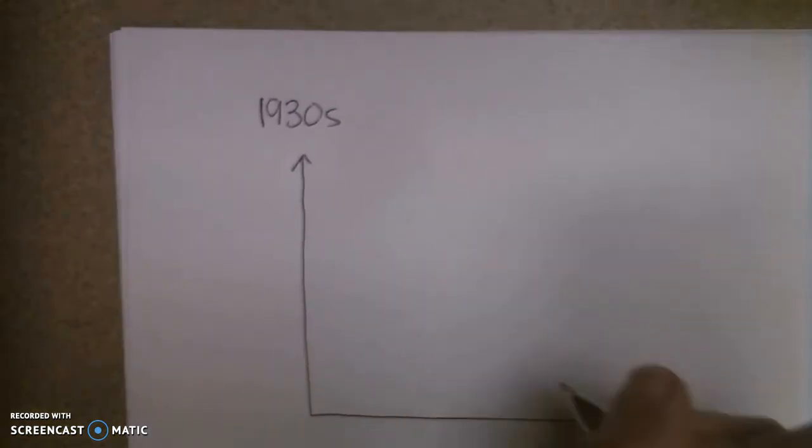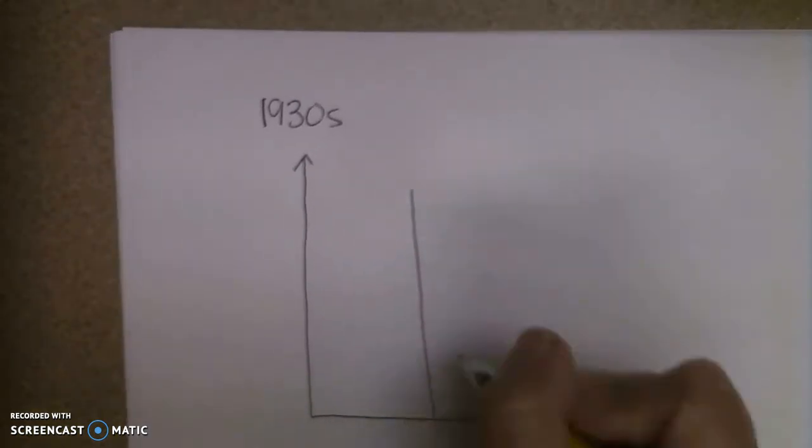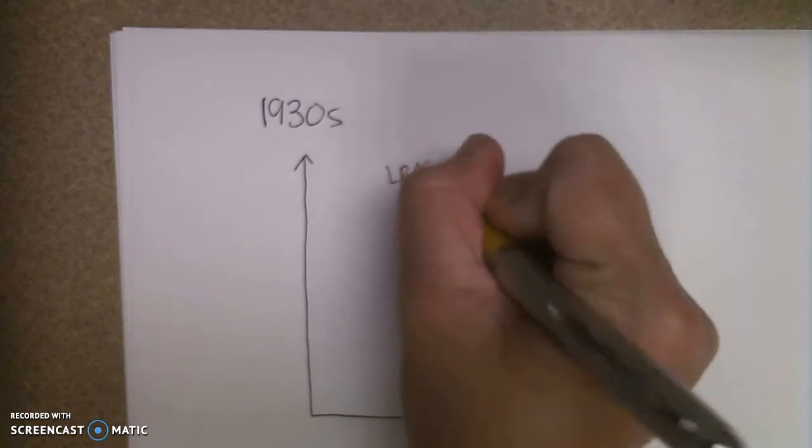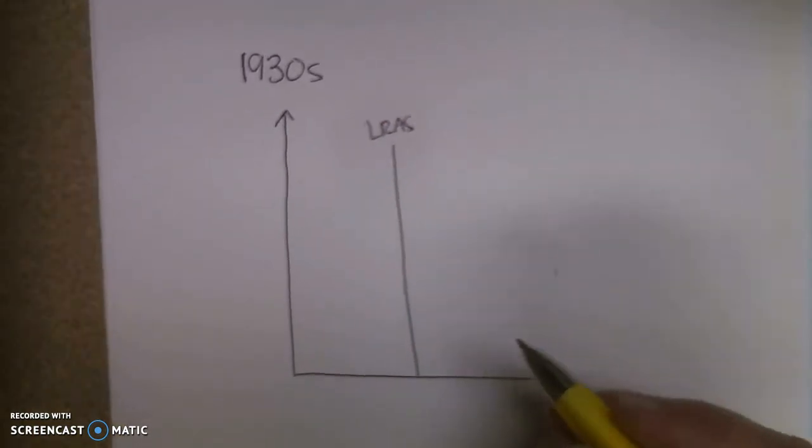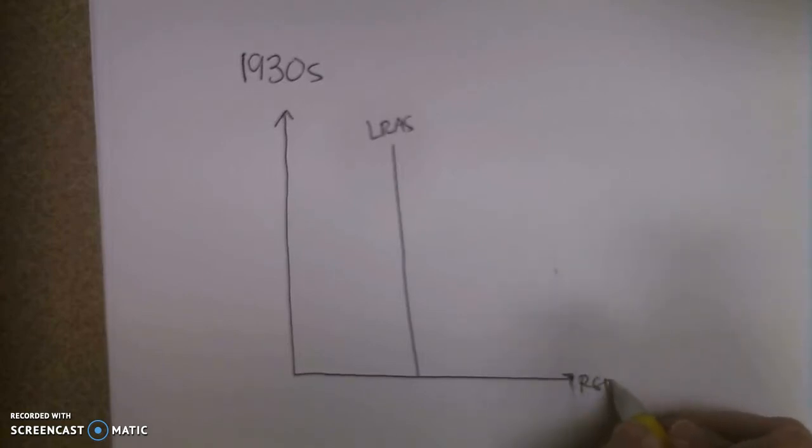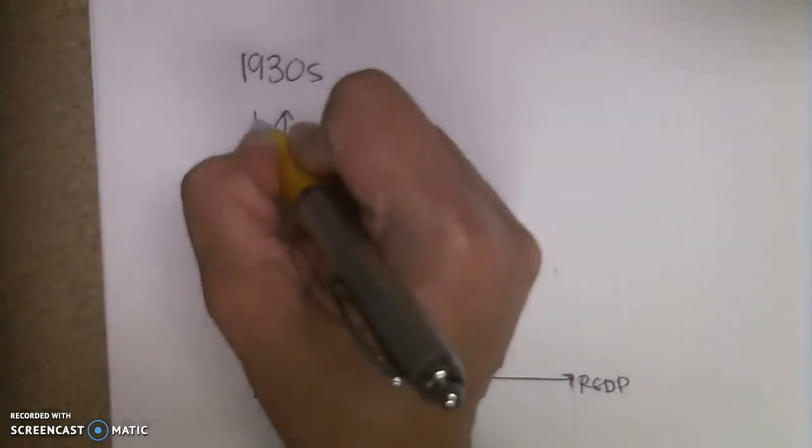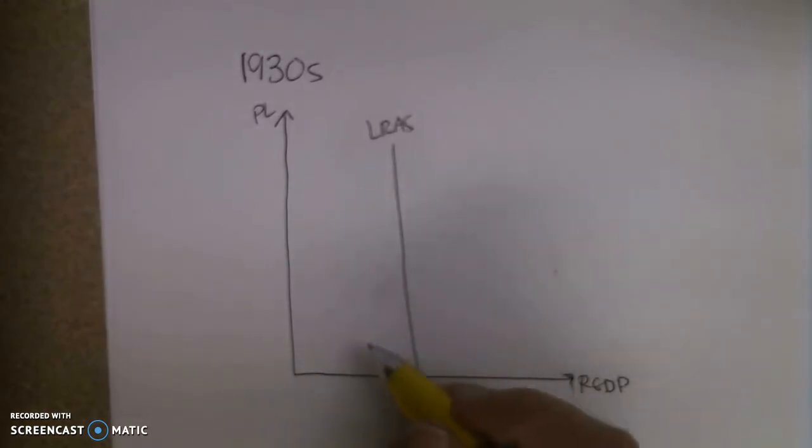Now, you have to remember, this is where we want to be, the long run aggregate supply curve. That is our goal, is to cross all three curves where we are on the short run and the long run with that long run aggregate supply curve. So this is our real GDP. This is our price level. And what occurred was this.